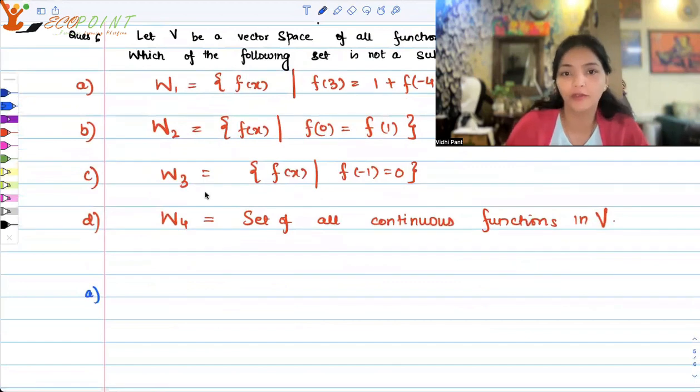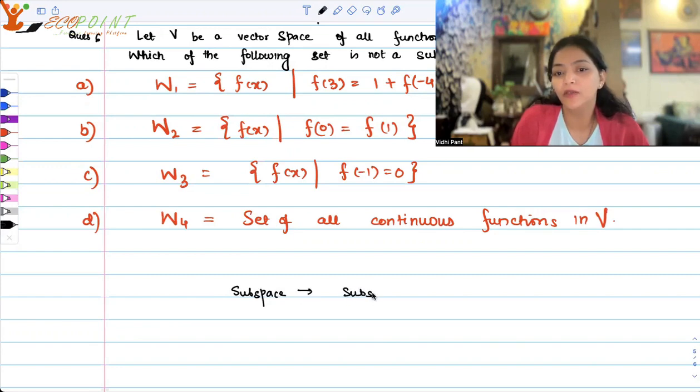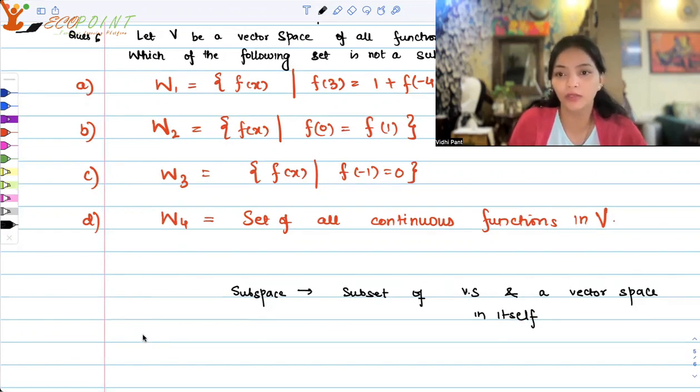Well, so first of all you should know what is a subspace. A vector space is a set of elements called vectors along with two operations, vector addition and scalar multiplication. A subspace is a subset of a vector space V and it has to be a vector space in itself. In order to check for this, we just have to check for two properties: closure under addition and closure under scalar multiplication.